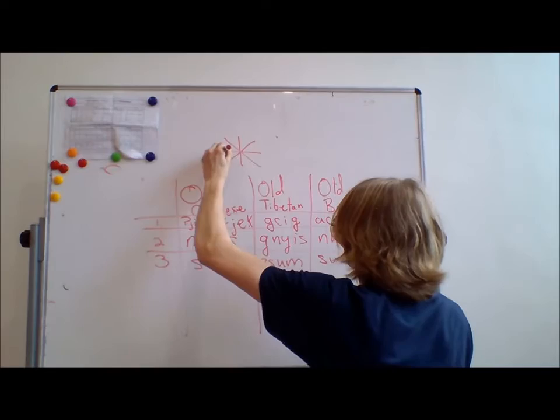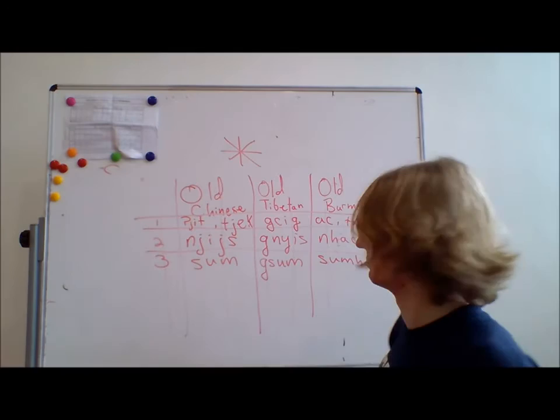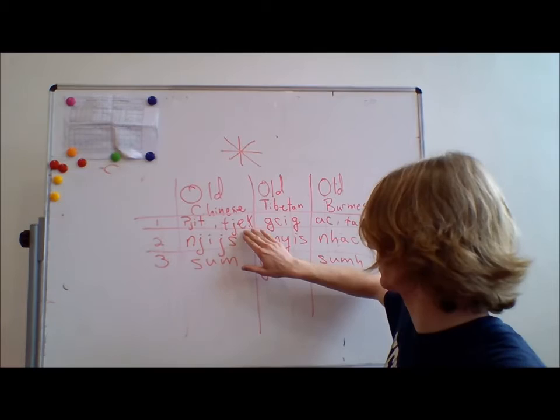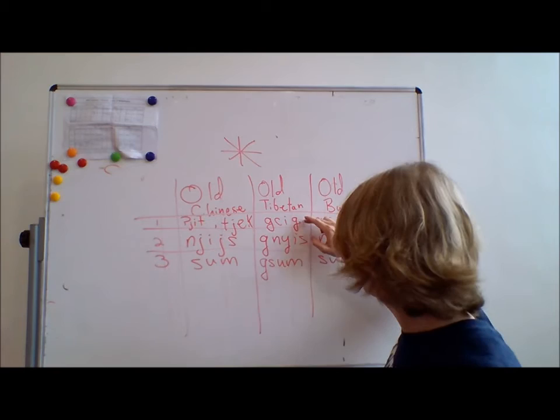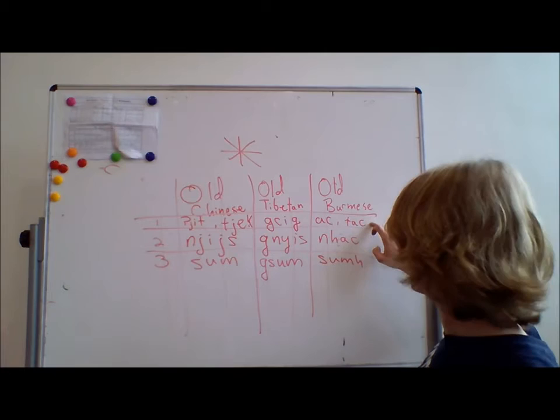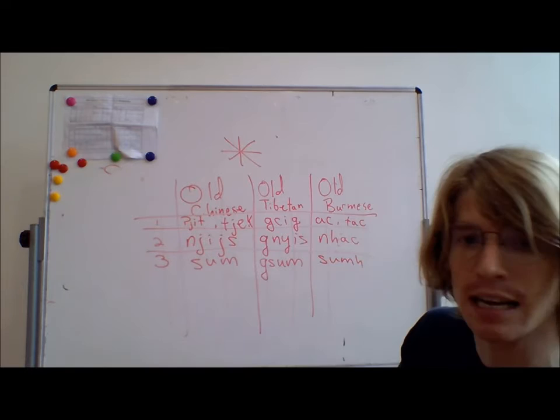So, in Old Chinese, we have yit or took, nis, sum. Old Tibetan, gik, gnis, sum. Old Burmese, ak or tak, rak, sum.